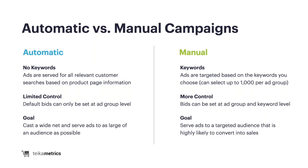If you find after looking at the customer search term report that your automatic campaigns are being served to customers using terms that aren't relevant to your products, go back to that product page and make sure you don't have any irrelevant data in there. The manual campaigns, on the other hand, are targeted a lot more specifically because you can add in keywords and set the bid at that level using different match types — a lot more control to find the right audience. By having specific keywords you're bidding on, you're able to adjust bids and be more aggressive on terms that work well. If something's converting, do more of it; if not, spend less.